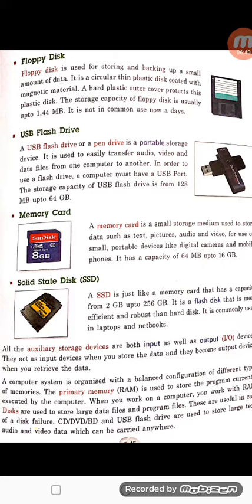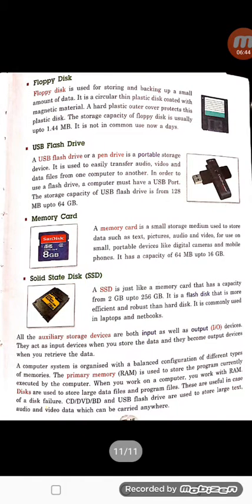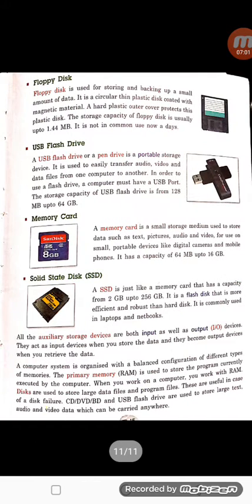The storage capacity of a USB flash drive is from 128 MB up to 64 GB. So our USB flash drive is smaller in size but it can have a good capacity. The storage capacity of a USB flash drive is better than all the disks we have covered. It ranges from 128 MB up to 64 GB.